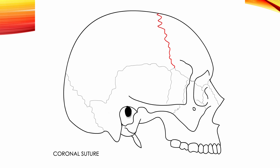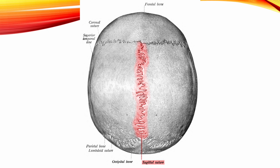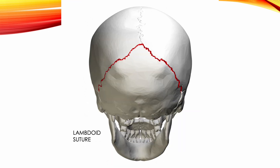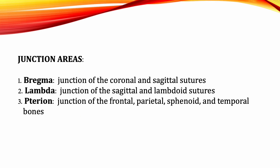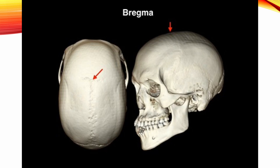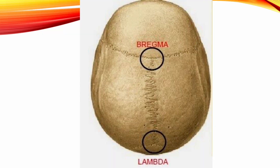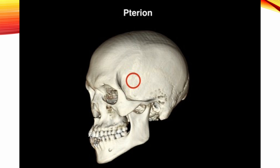The coronal suture is the suture between the frontal bone and the two parietal bones. The sagittal suture is the suture between the two parietal bones. The lambdoid suture is the suture between the two parietal bones and the occipital bone. The squamosal suture is the suture between the temporal and parietal bones. The junction areas of the skull include bregma, lambda, and pterion. Bregma is the junction of the coronal and sagittal sutures. Lambda is the junction of the sagittal and lambdoid sutures. Pterion is the junction of the frontal, parietal, sphenoid, and temporal bones.